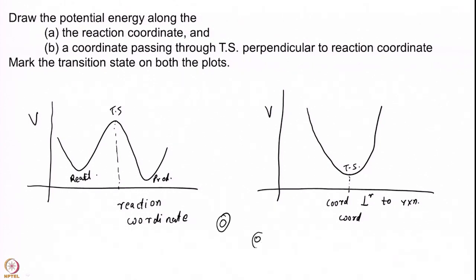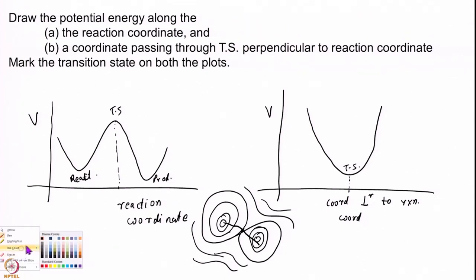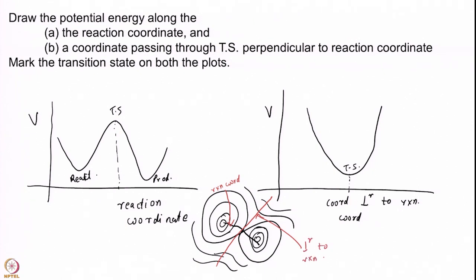Once more, with a contour plot — if I draw these kinds of contour plots: this is the reaction coordinate (in red), and this is a coordinate perpendicular to the reaction coordinate. So along the reaction coordinate versus perpendicular to the reaction coordinate — if you are walking along the perpendicular, you will get something like a minimum there.